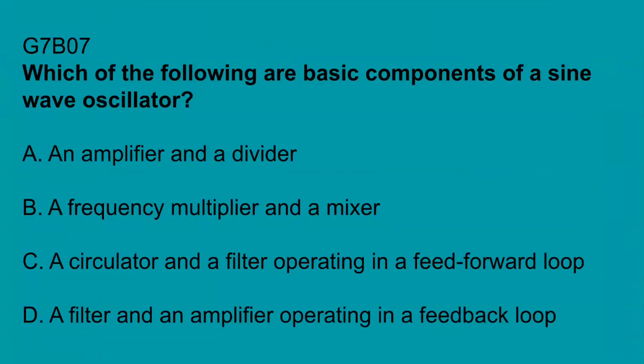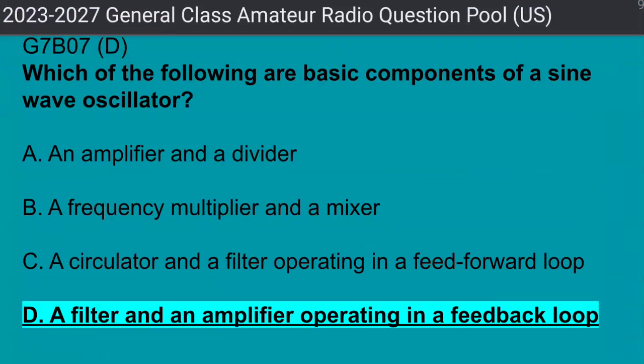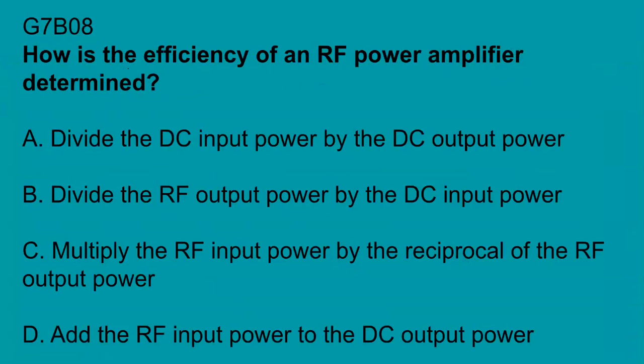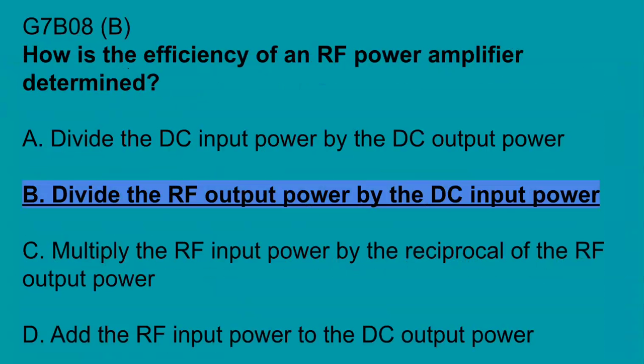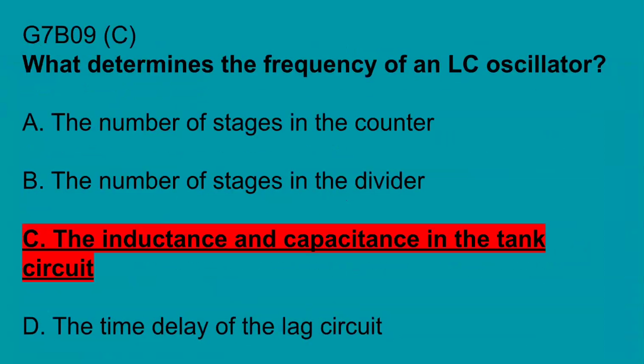G7B07, which of the following are basic components of a sine wave oscillator? A filter and an amplifier operating in a feedback loop. G7B08, how is the efficiency of an RF power amplifier determined? Divide the RF power output power by the DC input power. G7B09, what determines the frequency of an LC oscillator? The inductance and capacitance in the tank circuit.